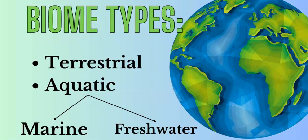The biomes on Earth come in different types. The main difference is terrestrial versus aquatic. Terrestrial biomes are all the biomes on land above sea level, which includes forests, tundra, rainforests, deserts, boreal forests, savannas, and grasslands — all those different types of biomes that you've generally heard about.